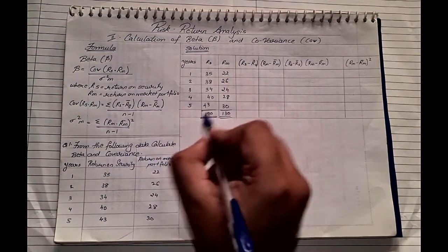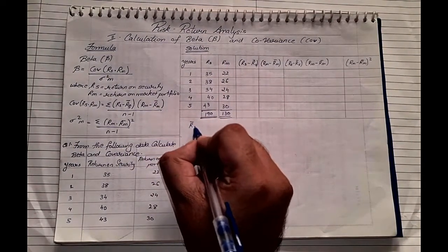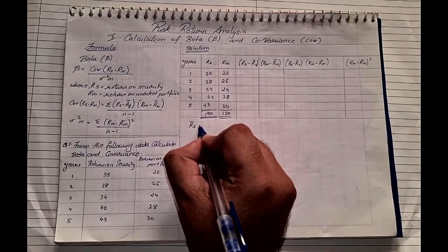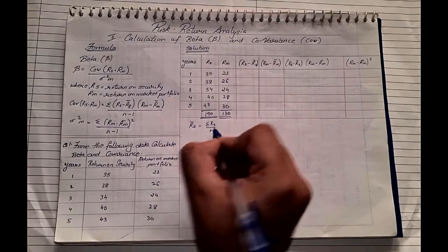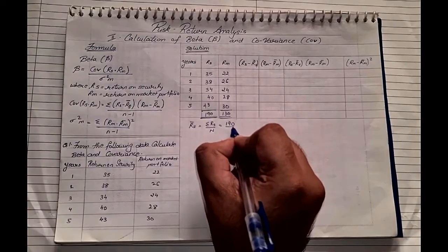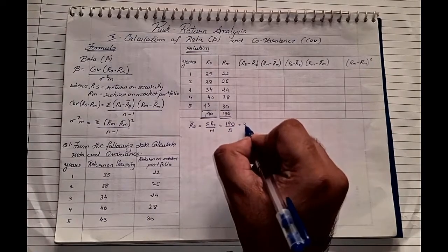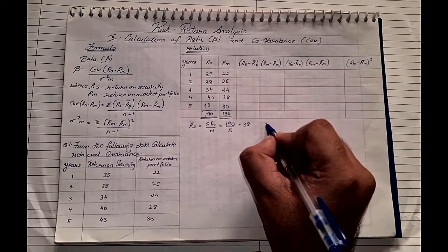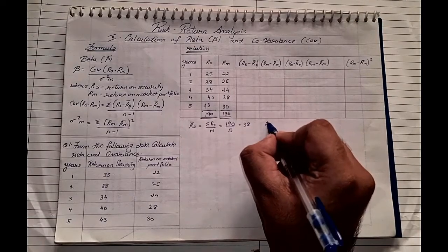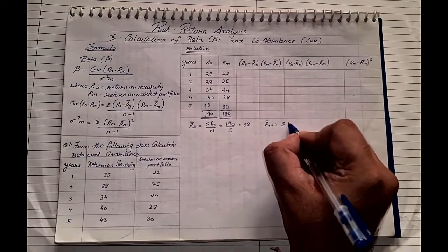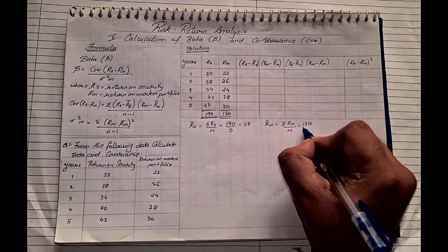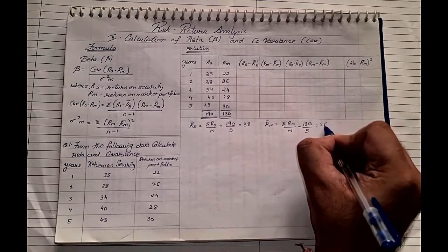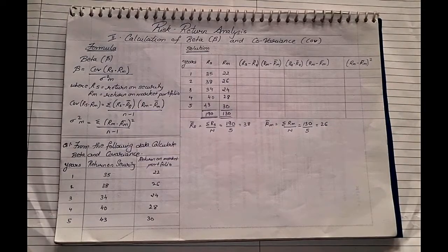Once we have the totals, the next step is to find r̄s, the average return on security, which is the summation of rs upon the number of years: 190 divided by 5, which comes to 38. Then r̄m, the average return on market, is 130 divided by 5, which comes to 26. These averages are the very first values we need before proceeding.